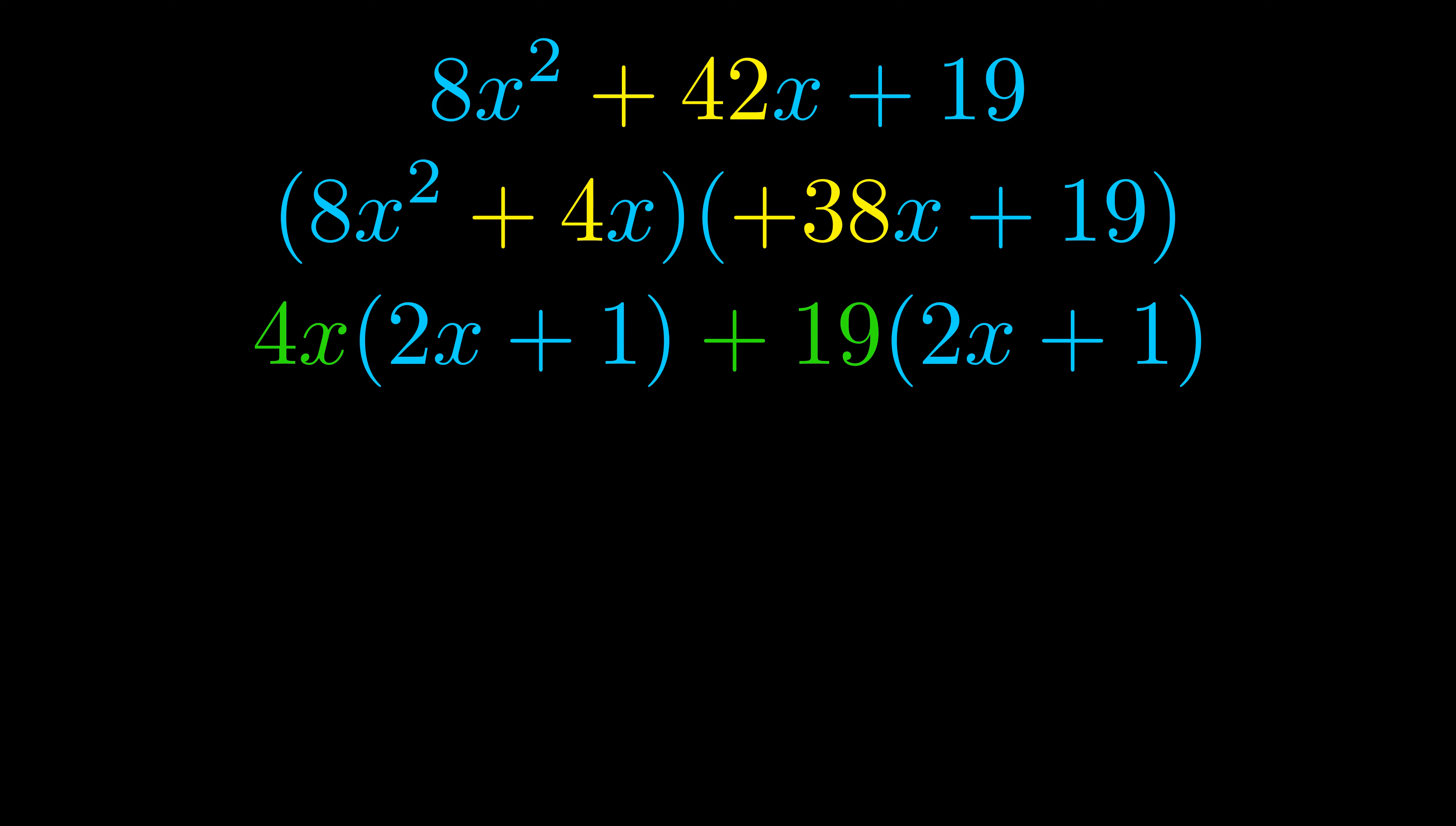Notice also how what remains inside of the parentheses is the same in both cases. The blue values are the same. Those blue values will become one of our factors and we will combine the two green values, the GCFs that we pulled out, to get the other one. And that is our fully factored equation.